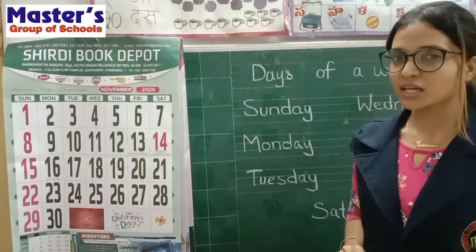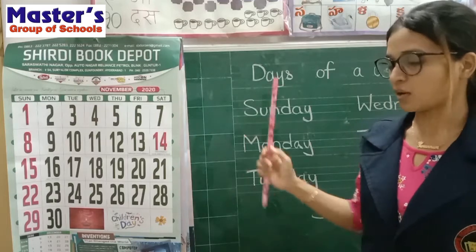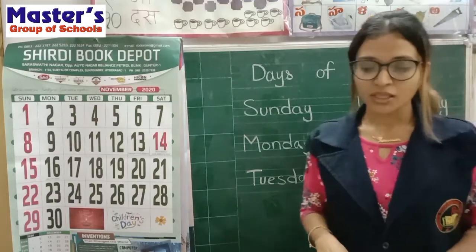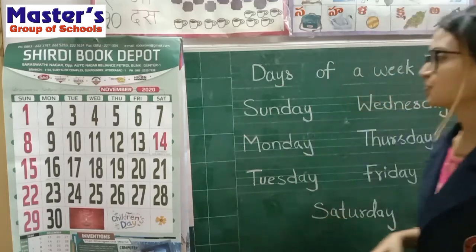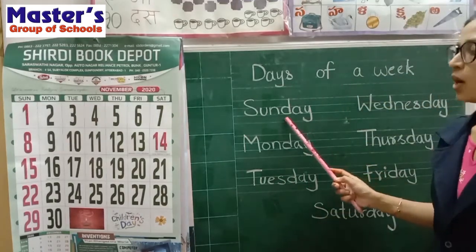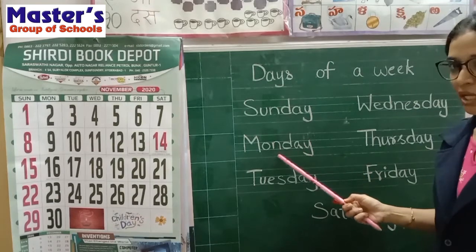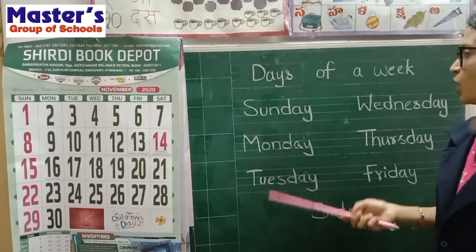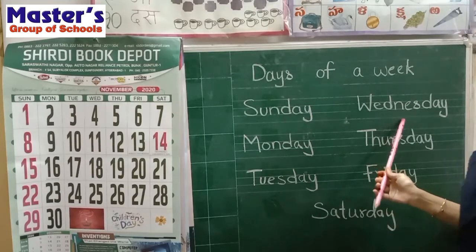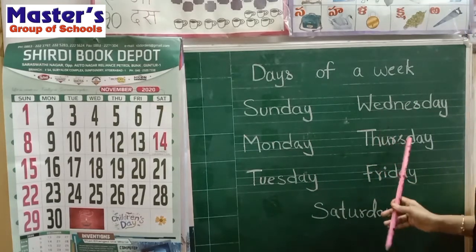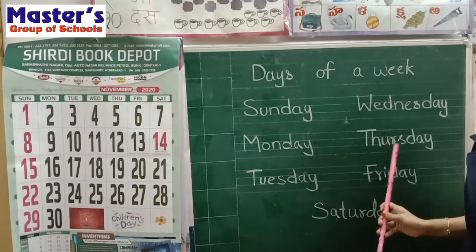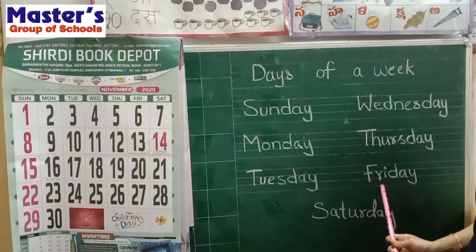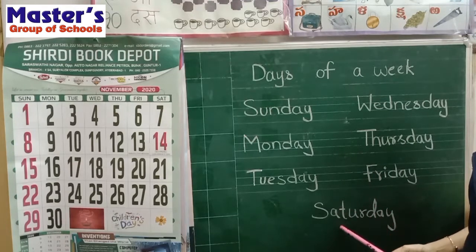What are they? We will learn now. They are Sunday, Monday, Tuesday, Wednesday, Thursday, Friday and Saturday.